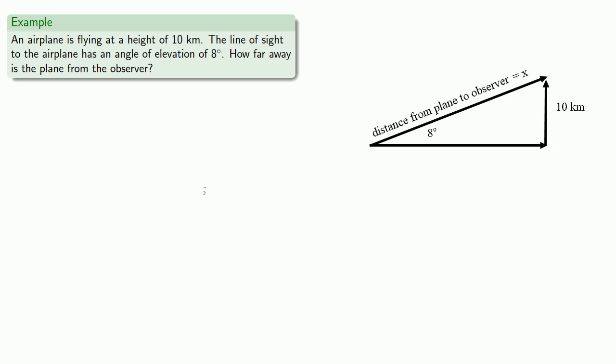So we'll use that equation. The sine of 8 degrees is opposite 10 over hypotenuse X. And let's solve this equation for X.